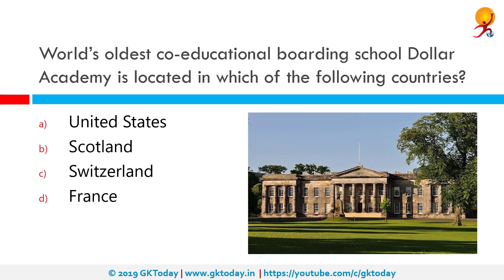The world's oldest co-educational boarding school, Dollar Academy, is located in which of the following countries? The correct answer is Scotland. Dollar Academy was founded in 1818 by benefaction of trader John McNabb and is an independent co-educational day and boarding school. Its open campus occupies a 70-acre site in the centre of the town of Dollar in central Scotland.